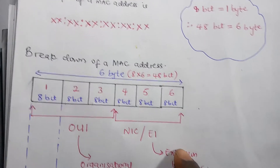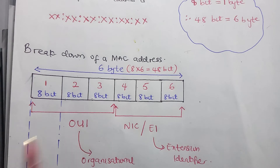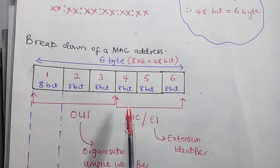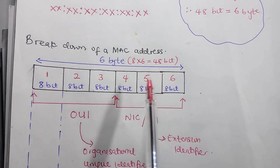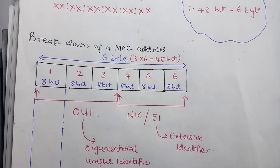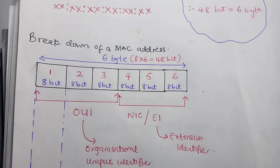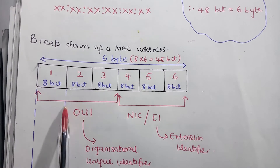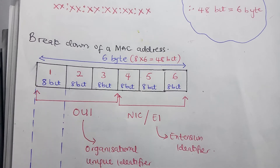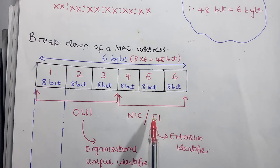Here is the block diagram — the breakdown of a MAC address. It consists of 6 bytes or 48 bits. Each box, which is each byte, consists of 8 bits. If we divide the 6 bytes into two halves, the first 3 bytes (24 bits) are designated by the OUI — Organizational Unique Identifier. The last 3 bytes are defined by the manufacturer producing that device, and it is called the Extension Identifier.